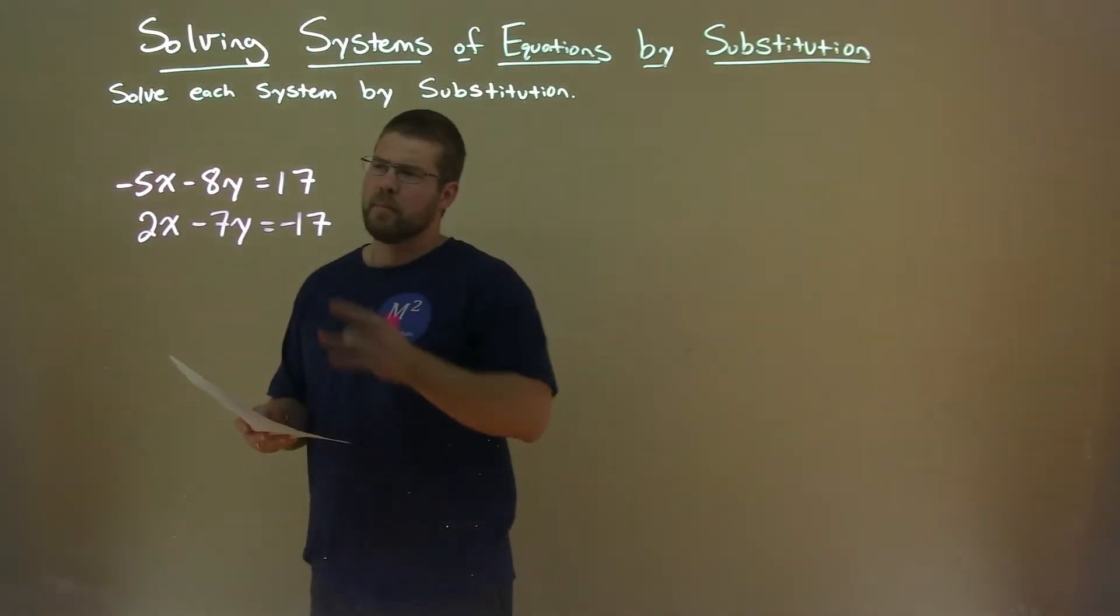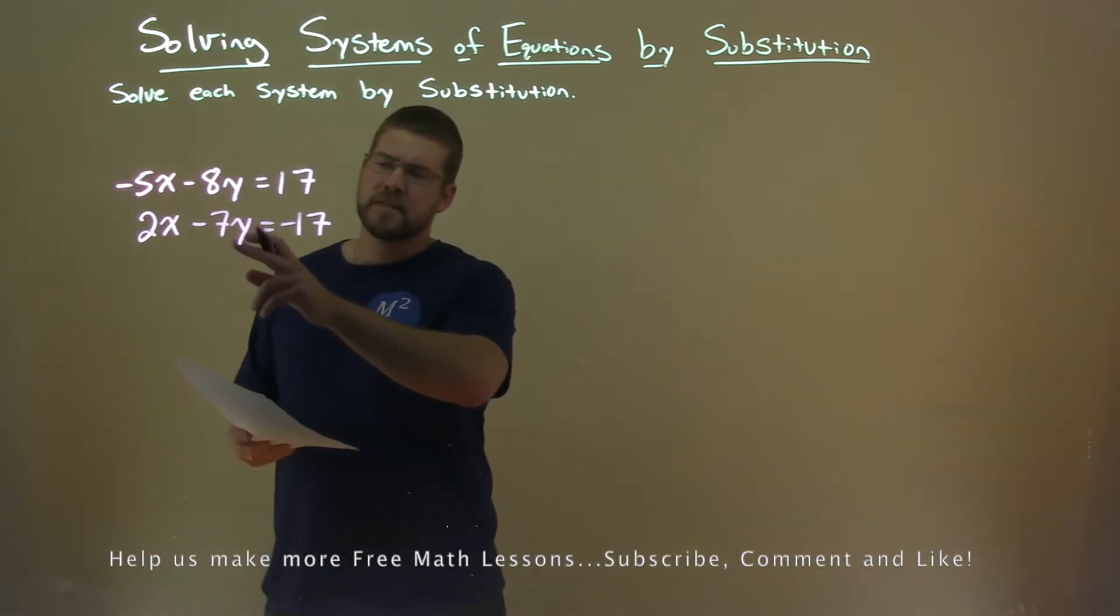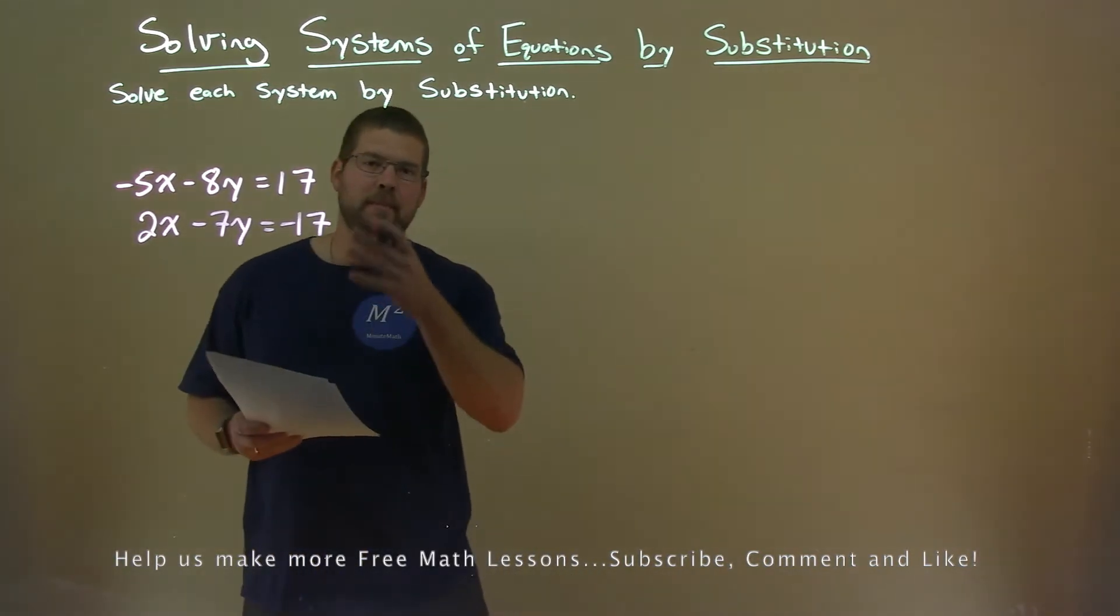We're given this problem here: -5x - 8y = 17, and 2x - 7y = -17. And we want to solve the system by substitution.